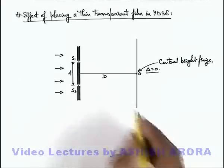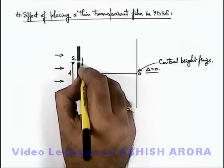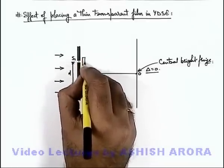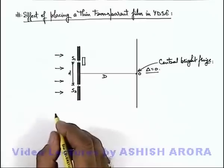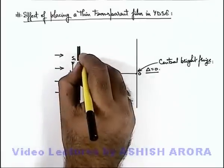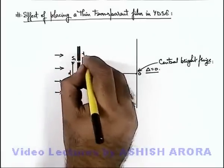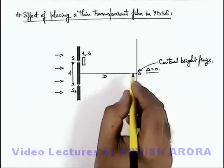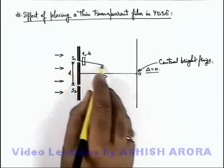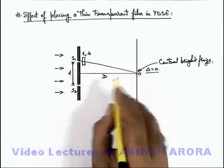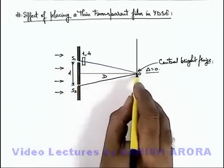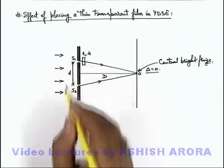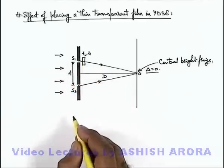Now in this situation, say in front of one of the slits, if we place a thin transparent film like a cellophane sheet, which has thickness t and refractive index μ, then in this situation even at point O when the 2 light waves are reaching — from S2 it is directly reaching, and from S1 it is reaching after passing through the transparent film.